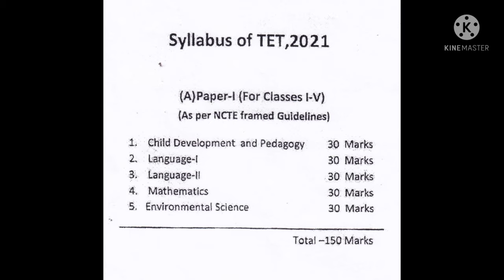Now let us move on to the syllabus. Paper One is for the LP section and consists of a total of 150 marks divided into five segments, where each segment carries 30 marks. The segments are: Child Development and Pedagogy; Language One, which is the mother tongue of the candidate; Language Two, which is English; Mathematics; and Environmental Studies.